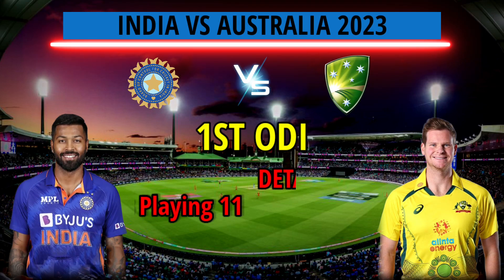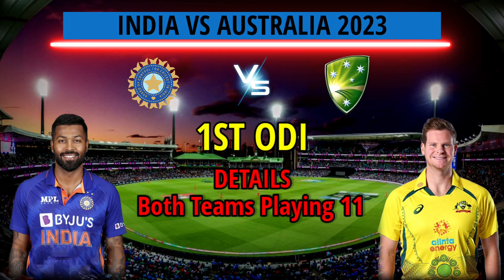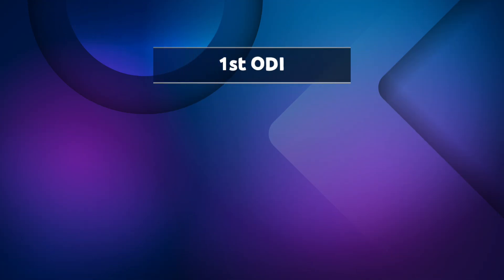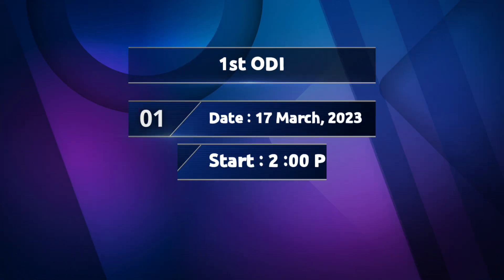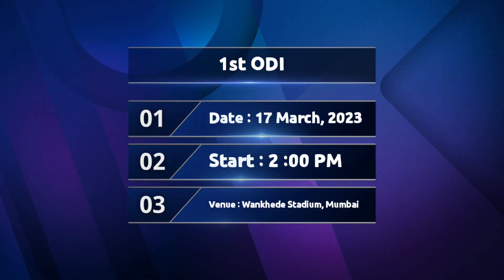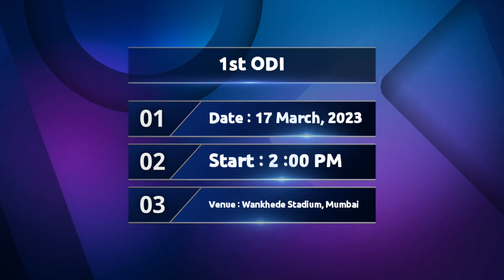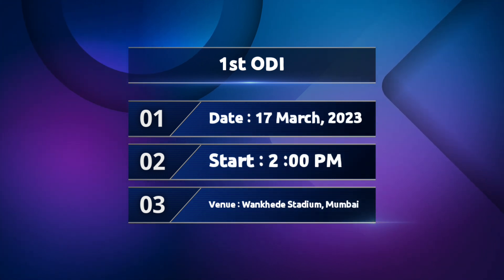India vs Australia First ODI Match Details and Both Teams Playing 11. Starting Date: 17th March 2023, 2pm Indian Standard Time. Venue: Wankhede Stadium, Mumbai.